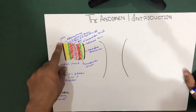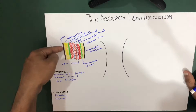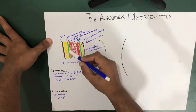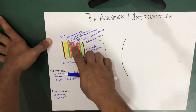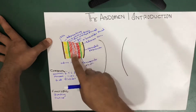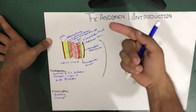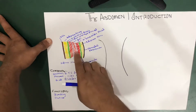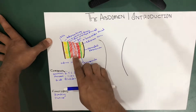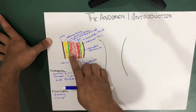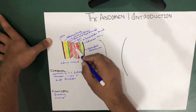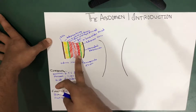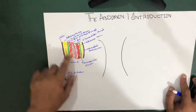As we move from outside to inside, first we encounter the skin. As we cross the skin, we have adipose tissue. As we cross the adipose tissue, we cross the superficial fascia, shown in green. As we cross the superficial fascia, we encounter three main muscles: the outermost is the external oblique muscle, then the internal oblique muscle, and then the transversus muscle.